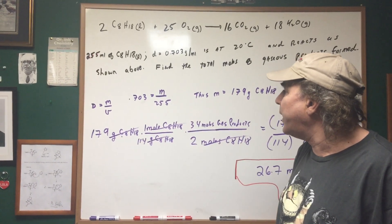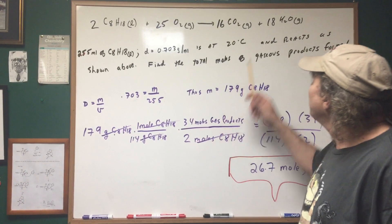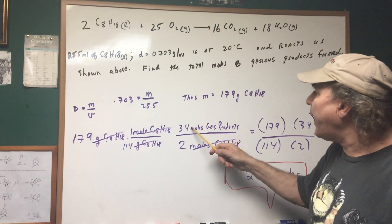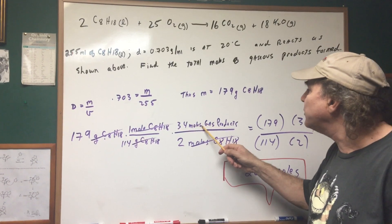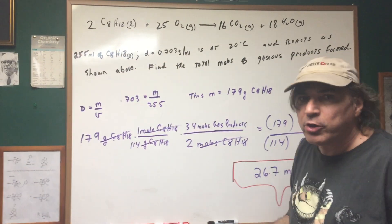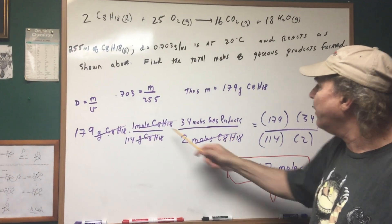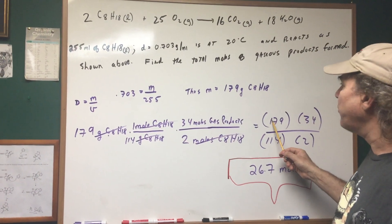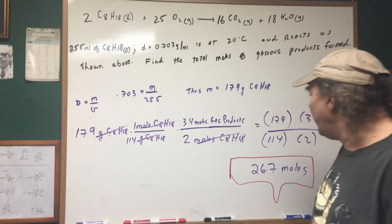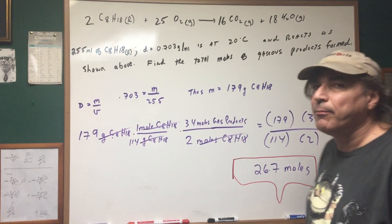We have 179 grams of octane and what I'm going to do is convert grams of octane to moles. One mole is 114 grams, and then there's 16 CO2 and 18 H2O, which is a total of 34 moles of gas products. So that means there's 34 moles of gas products produced from every 2 moles of octane. That crosses out and you get 179 times 34 over 114 times 2, and it comes out to be 26.7 moles.